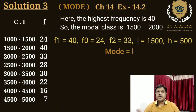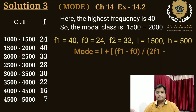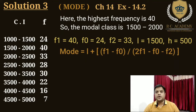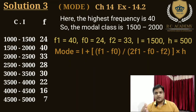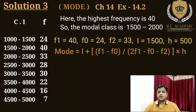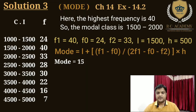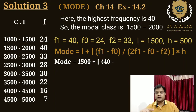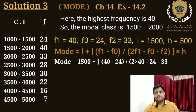Then hum apply karenge formula: Mode = L + (F1 - F0) / (2F1 - F0 - F2) × H. Ab formula ke andar values put karenge: Mode = 1500 + (40 - 24) / (2×40 - 24 - 33) × 500.